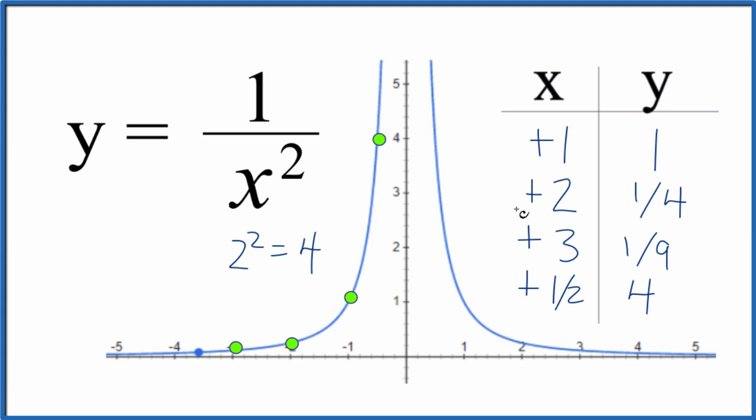When you graph these points here, for example, x is 2, y is one fourth, it'll be on the line, just like the others. So that's the graph for y = 1/x².